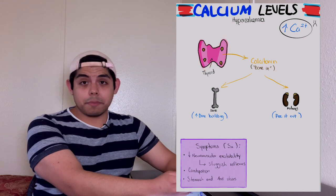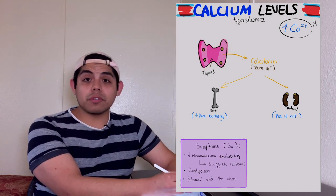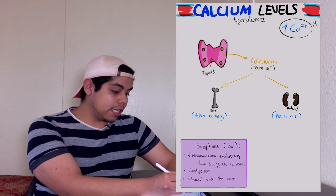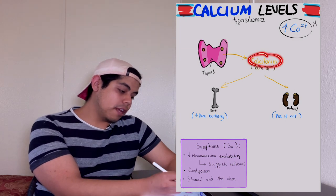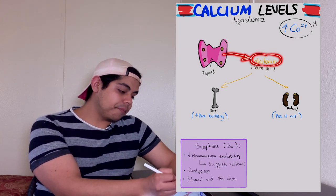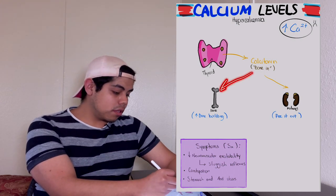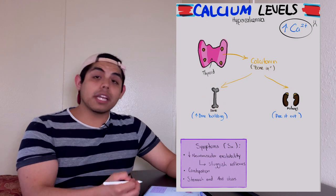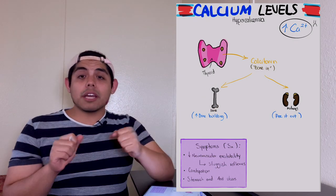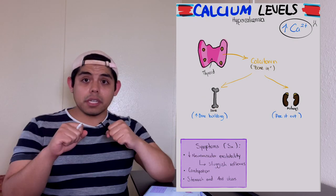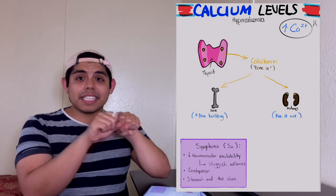The hormone that the thyroid will release is called calcitonin. Now calcitonin will target the bones and the kidneys as well. In the bones, it will cause building of the bone, so that will be taking the calcium from the blood and putting that calcium inside of the bone.